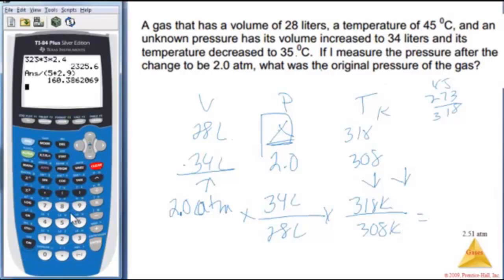And if I punch all this, I get 2 times 34 times 318 equals, divide by 28 times 308, close my parentheses, and I get 2.5. Looks like I only want 2 sig figs, so 2.5 atmospheres.